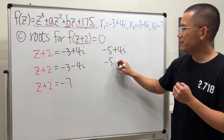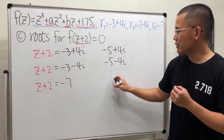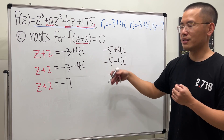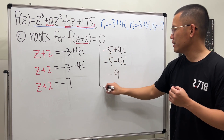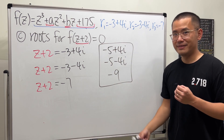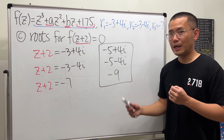The remaining roots are z = negative 5 minus 4i and z = negative 9. So the three roots of f(z + 2) = 0 are negative 5 plus 4i, negative 5 minus 4i, and negative 9. That does it.